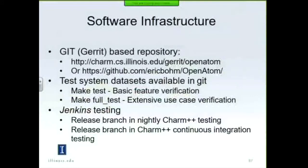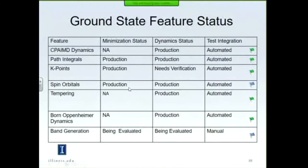We keep the repository in our own Git repository and try to make sure the software remains robust by doing automated testing and continuous integration testing combined with Charm++, so that changes to Charm++ are tested against OpenATOM so we don't mysteriously break it. Here's a quick summary of the main features we are supporting. The left side has the names and the various kinds of minimization versus dynamics components associated with them. The right side has the level of testing automation associated with these features. We're still automating a few of these, and band generation is still under evaluation, but we're making decent progress overall in supporting the main goals of the project.